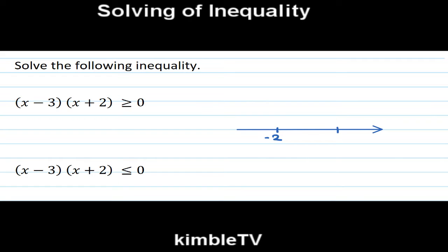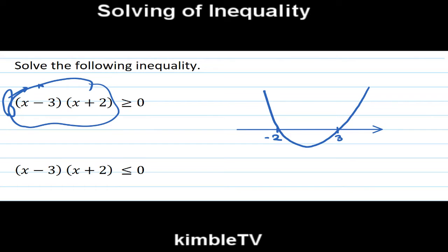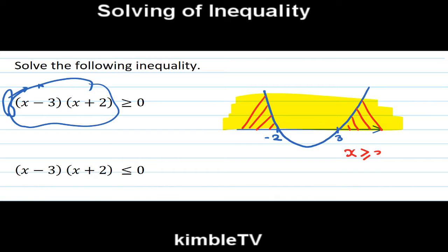Let's solve the first inequality. On the number line, the roots are minus 2 and 3. This sign is positive, so we start from here like this. The Y value must be greater than 0 — positive. Therefore X is greater than or equal to 3, or X is less than or equal to minus 2. This is the answer.